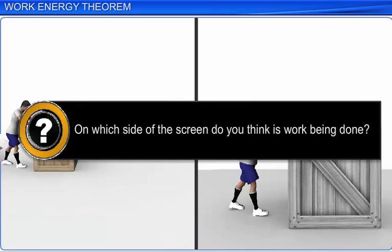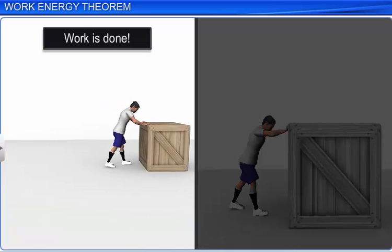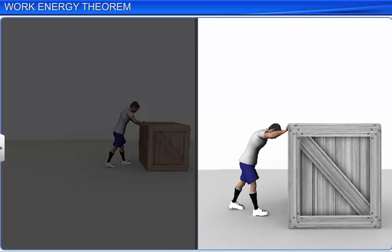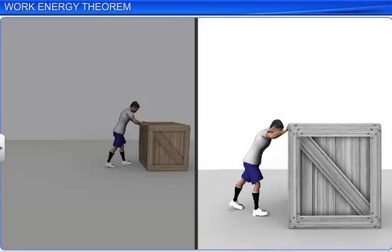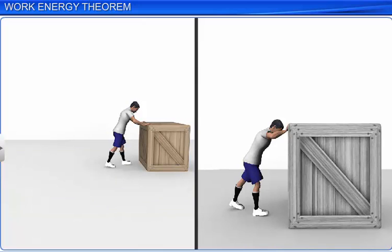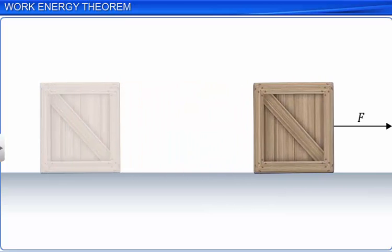Work is being done only on the left side of the screen, where we see that a block is being pushed across the floor. Even though in the second case the wooden crate is being pushed, there is no work being done. This is because, in physics, work is said to be done only when an applied force succeeds in moving a body. When the block is pulled by an external horizontal force F, it is put into motion and is displaced through a certain distance D, and we say work is done on the block.